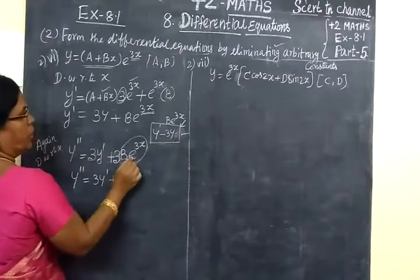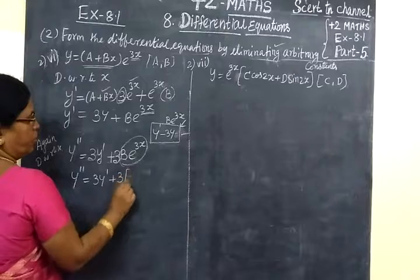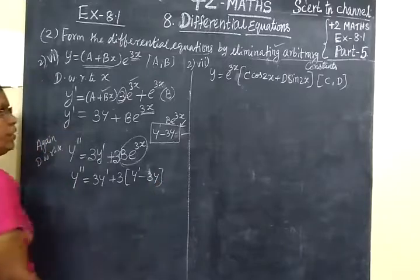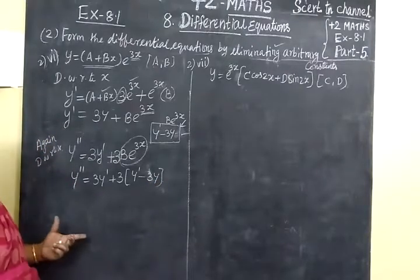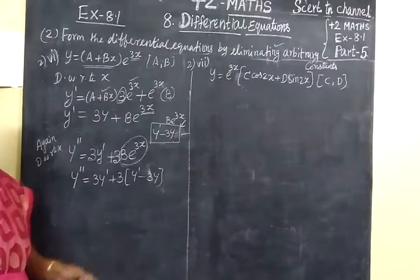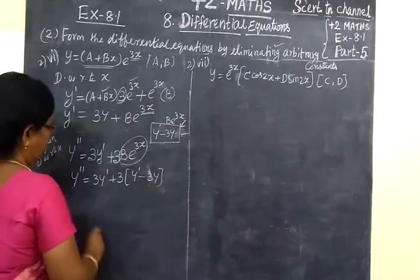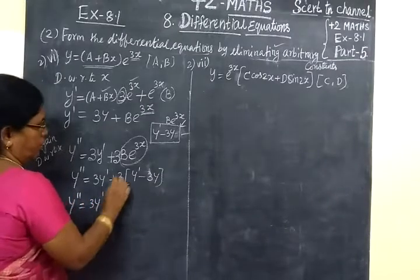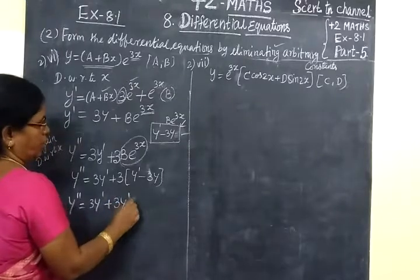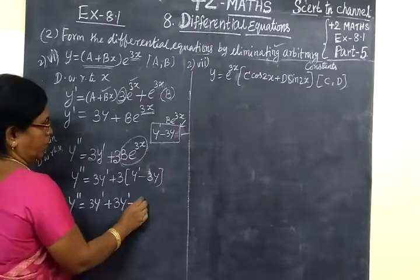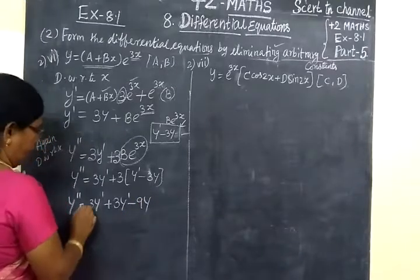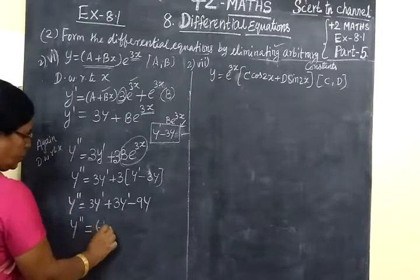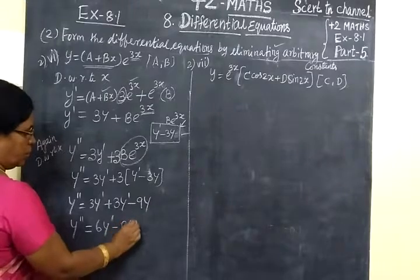The value of B·e^(3x) — so bracket y minus 3y. Our aim is to eliminate A and B and get the final differential equation with no A and no B. So y double-dash equals 3y dash plus — taking 3 inside — 3y dash, then 3 times 3 is 9, so minus 9y.